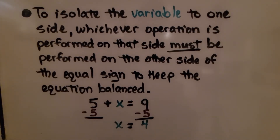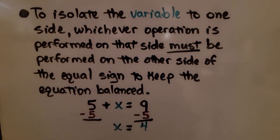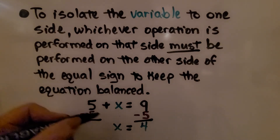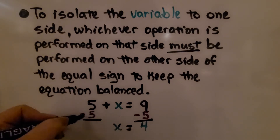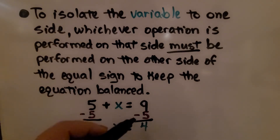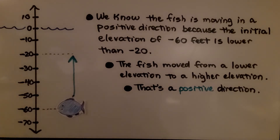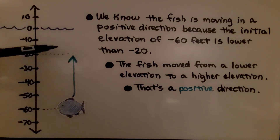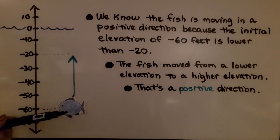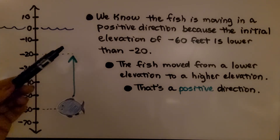To isolate the variable to one side, whichever operation is performed on that side must be performed on the other side of the equal sign to keep the equation balanced. For example, if we have positive 5 and we want x alone, we do negative 5 to create a zero pair, and we must also subtract 5 from the other side. x equals 4. For the fish problem, the fish is moving in a positive direction because negative 60 is lower than negative 20 — the fish moved from a lower elevation to a higher elevation.